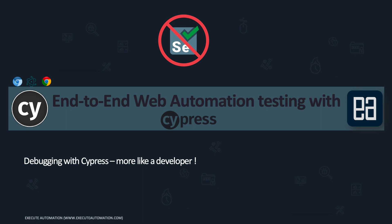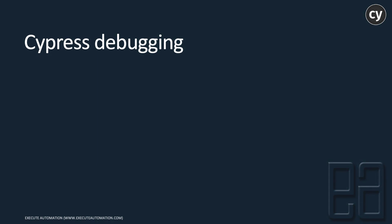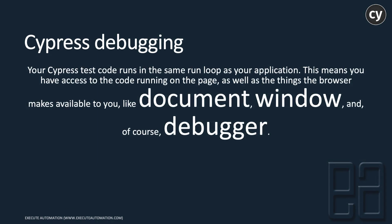We have already talked about debugging a little — by default, Cypress returns a lot of assertions and shows the actual behavior or output of the UI in the playground as a label. But if you want to really debug the application, put a breakpoint, and see the actual behavior at a particular point, you can do that using Cypress debugging. Your Cypress test code runs in the same run loop as your application, giving you access to the code running on the page as well as browser-available objects like document, window, and the debugger.